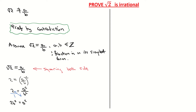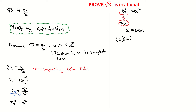So what does 2b² = a² basically mean? Since 2 times any number must always give an even number, and 2b² equals a², that means a² is an even number. Now a² means a multiplied by a, so a times a is even.